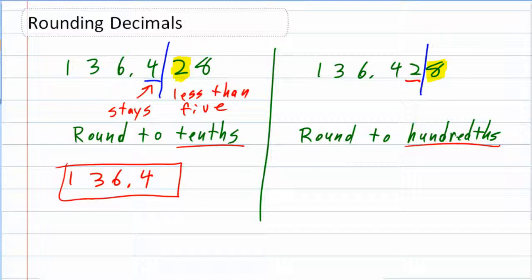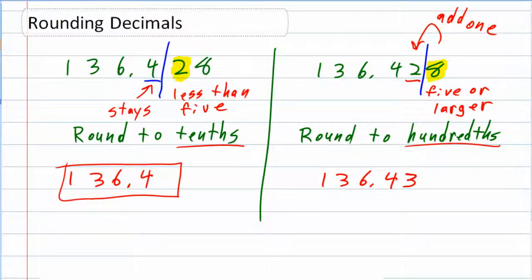The 8 is not less than 5. It is 5 or larger. That means I need to do something with the 2. I have to add 1. I need to increase that 2 by bumping it up one digit, one place value. So this time, my answer is 136.43. I had to add 1 to that 2 because the number behind it was 5 or larger.